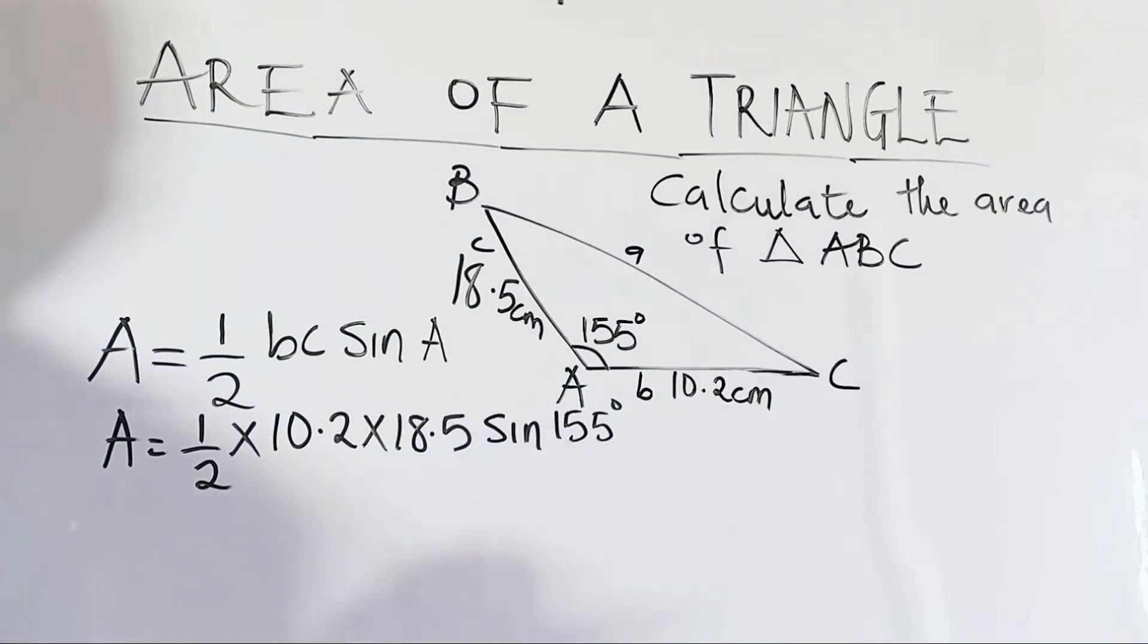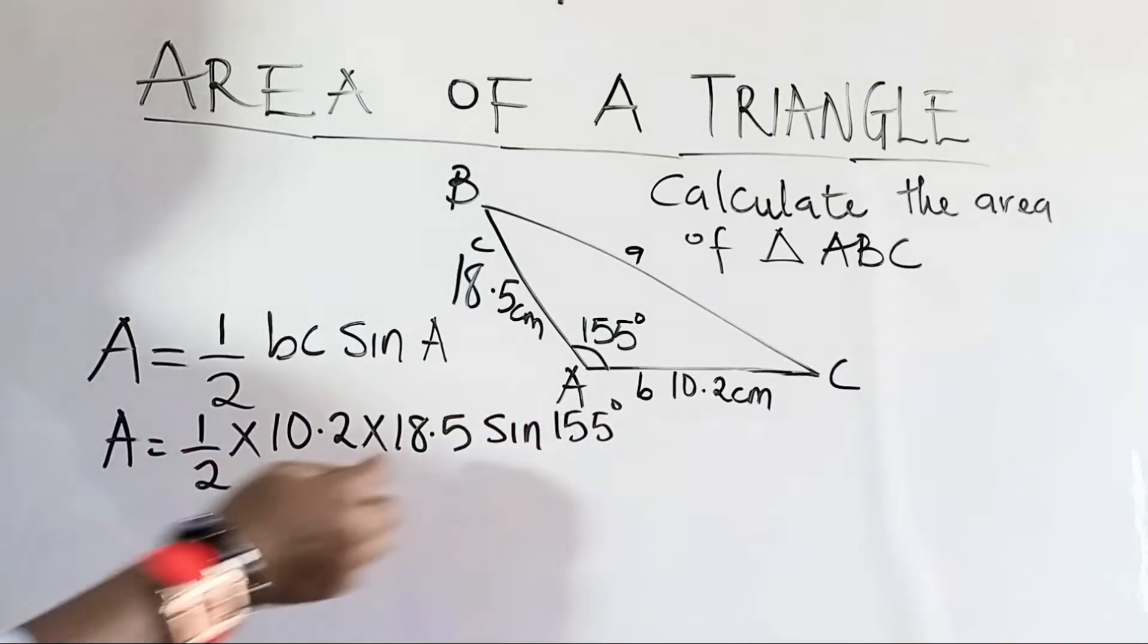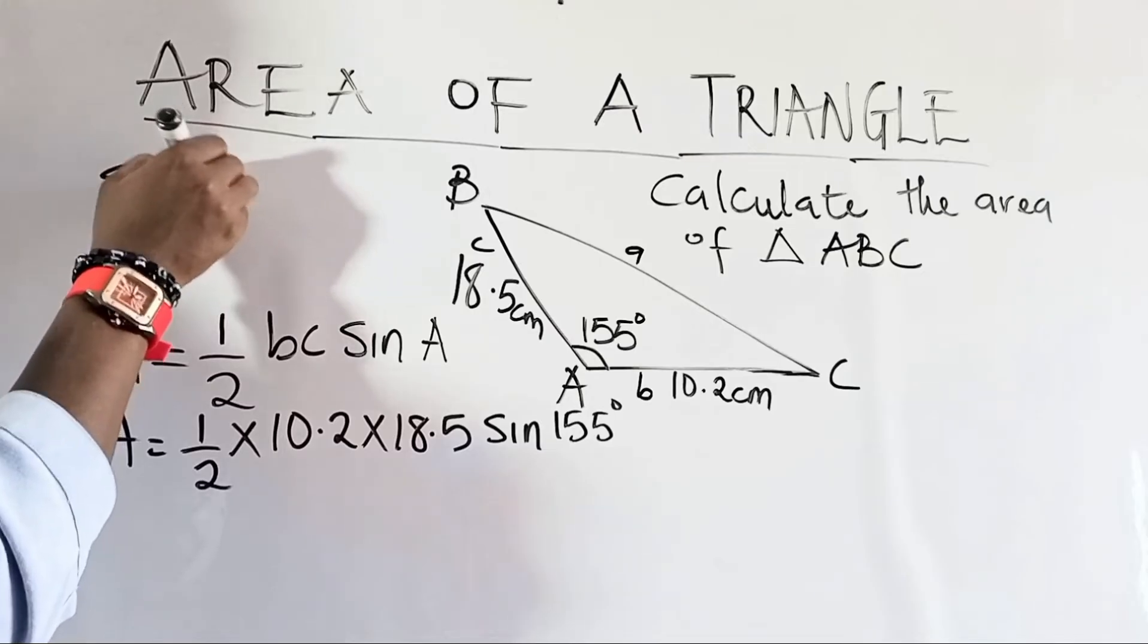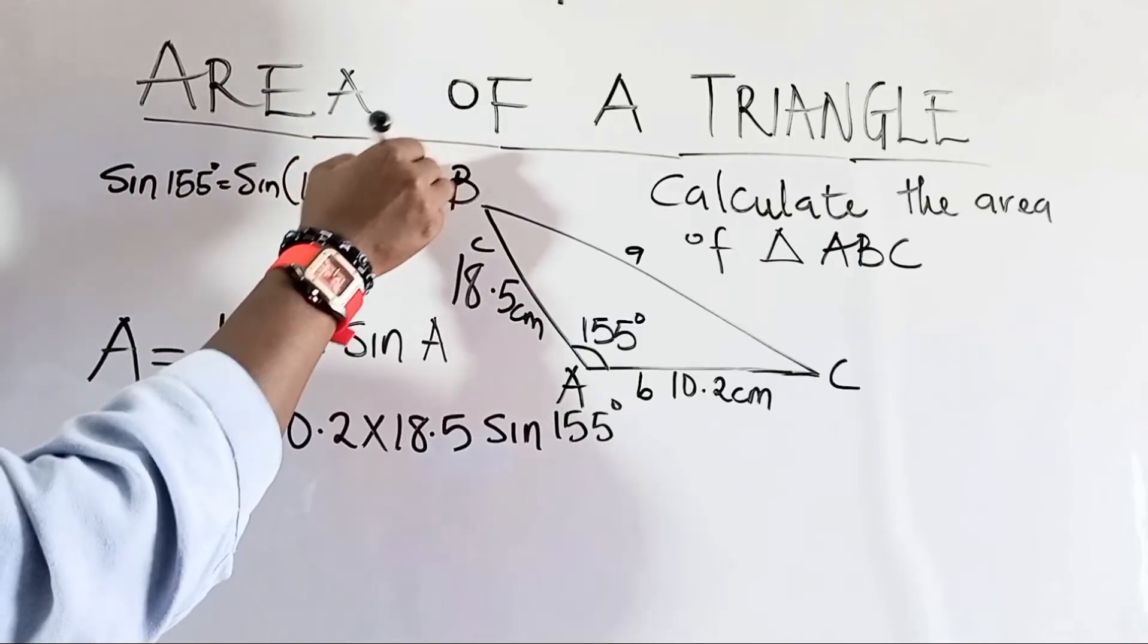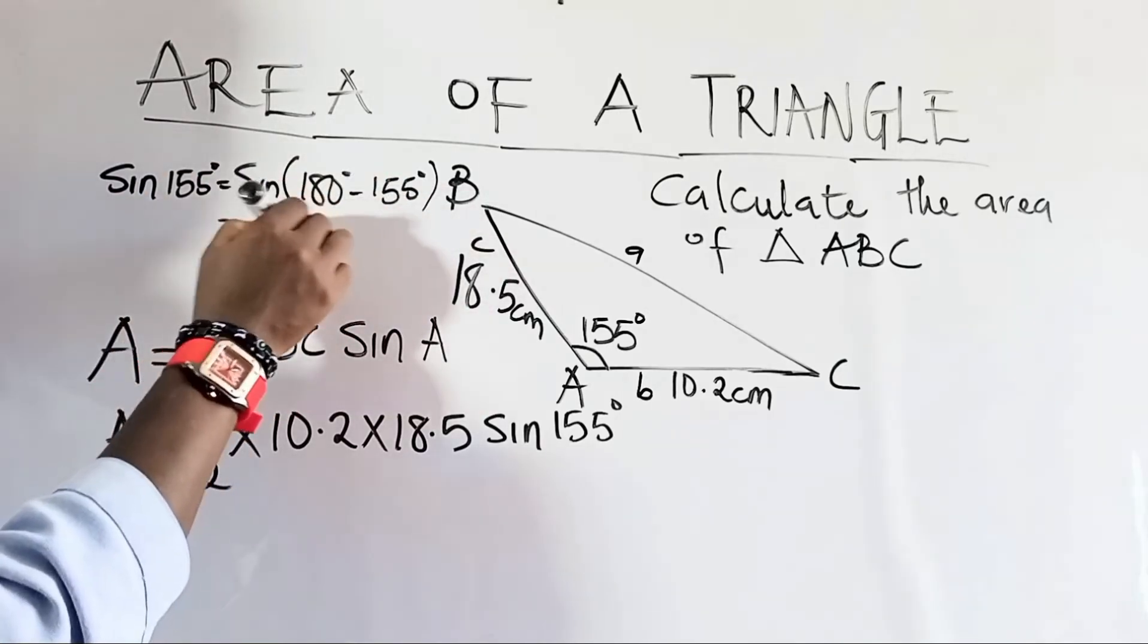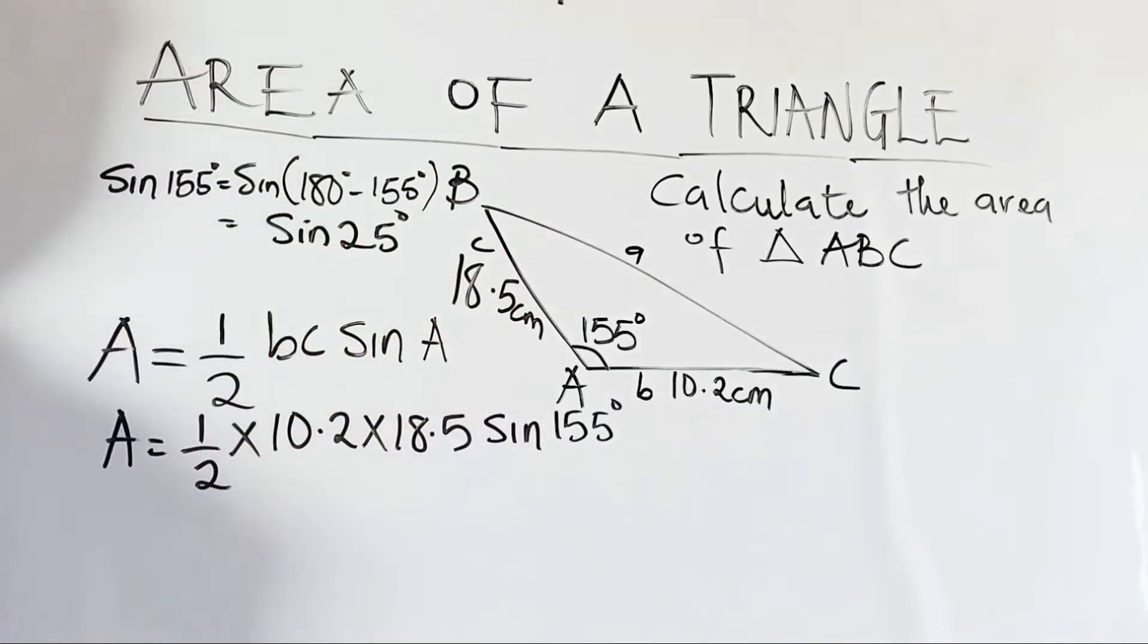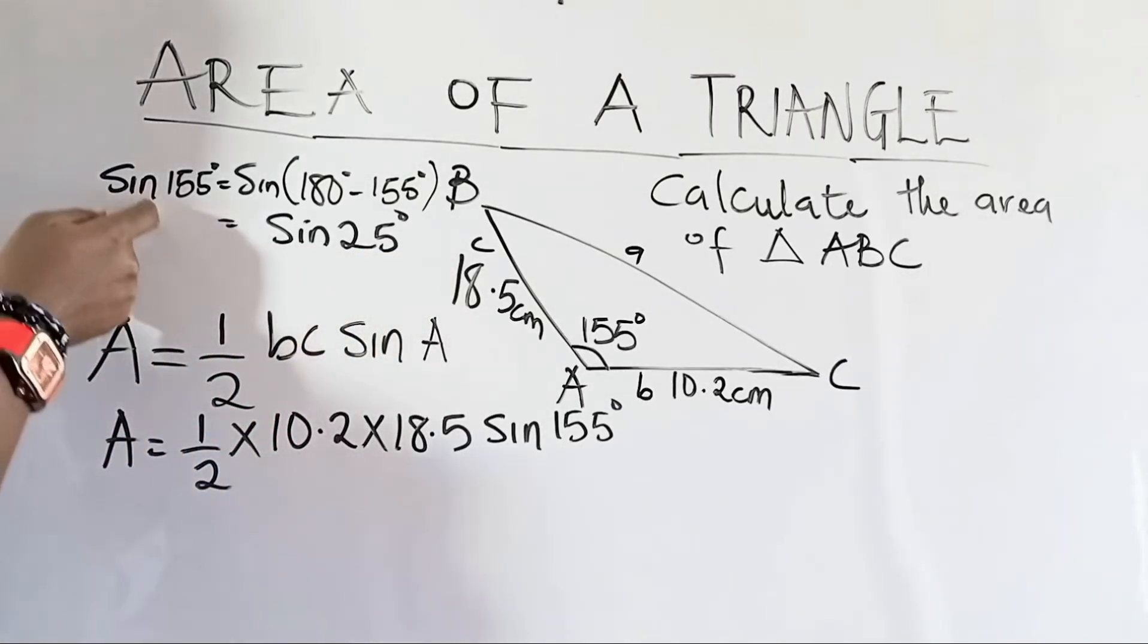If you're using your calculator, it's very easy to find sine 155. But if you are using your table of values, you can find sine 155. So the way to do that is this. You know sine 155 degrees is also equal to sine 180 degrees minus 155 degrees. So sine 155 is also equal to 180 minus 155, you have 25 degrees. So sine 155 is also equal to sine 25 degrees. So for the purpose of those that would want to use their four-figure table, this is how to convert.